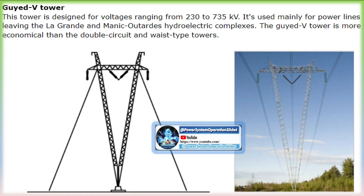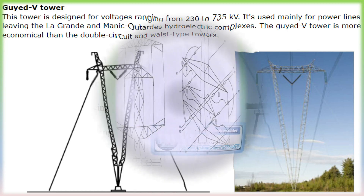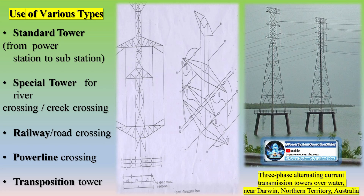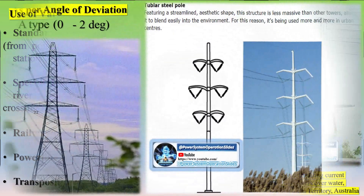The main supporting unit of an overhead transmission line is the transmission tower, which must carry the heavy transmission conductor at a sufficient safe height from the ground and sustain all kinds of natural stresses. A power transmission tower consists of the following parts: peak of transmission tower, cross arm of transmission tower, boom of transmission tower, cage of transmission tower, transmission tower body, leg of transmission tower, and stub anchor bolt and base plate assembly.